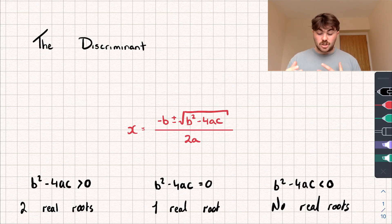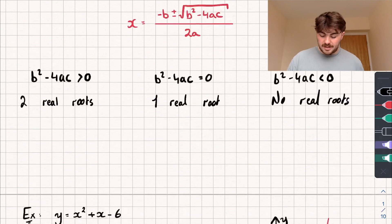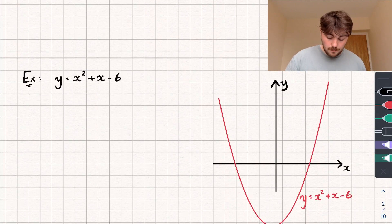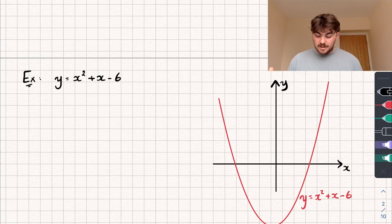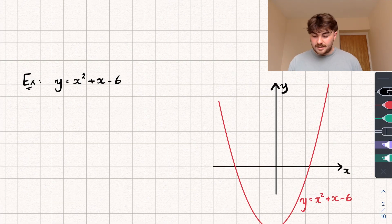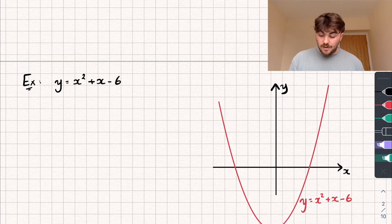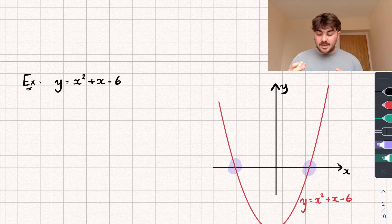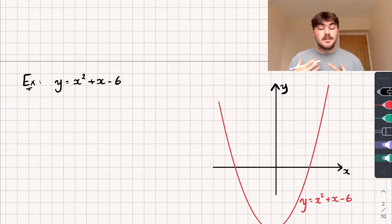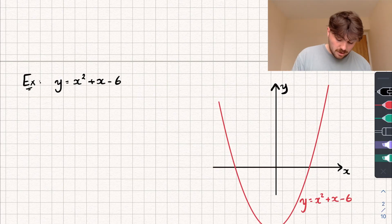Just to give us some more context and show what this means graphically, we're going to take a look at three pretty basic examples. Here we have y equals x squared plus x minus 6, and you can see I've drawn a nice sketch of this graph on the right-hand side. From the graph it has two real solutions — you can see it intersects with the x-axis twice. So let's calculate the discriminant, and we should expect it to be greater than 0.